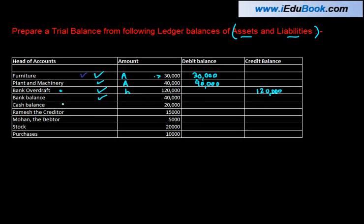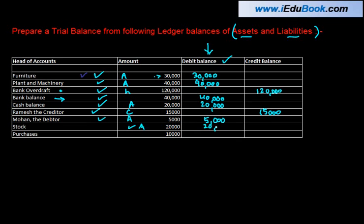Bank balance — if you have money, it's an asset, so we will put it in the debit balance column. Cash balance is again an asset with a debit balance. Ramesh the creditor is a liability, so we write it in the credit column. Mohan the debtor is an asset because we have to get money from him, so it has a debit balance and we write it in the debit column. Stock is again an asset, so we write it in the debit column.